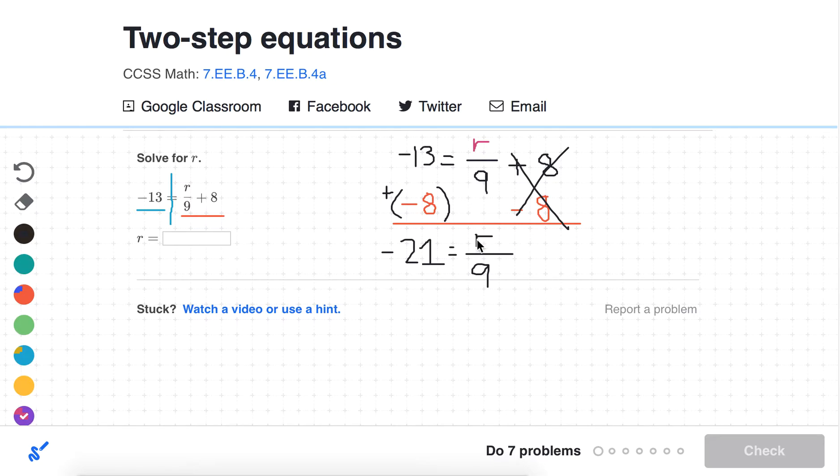So now we have some number r divided by 9 equals negative 21. We're going to do the inverse operation to peel away this next layer of the onion, which is dividing by 9. If we multiply by 9, we're going to cancel that out, because when you divide by 9 and then multiply by 9, you're just back to 1. So over here, we're just going to have r. We've peeled away both layers by subtracting 8 and multiplying by 9.